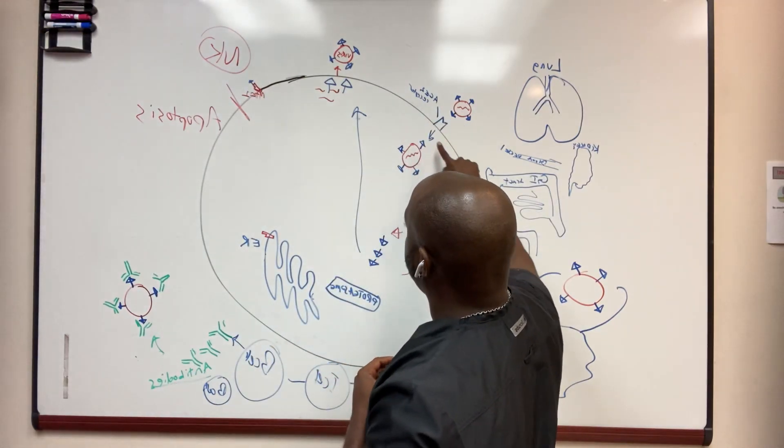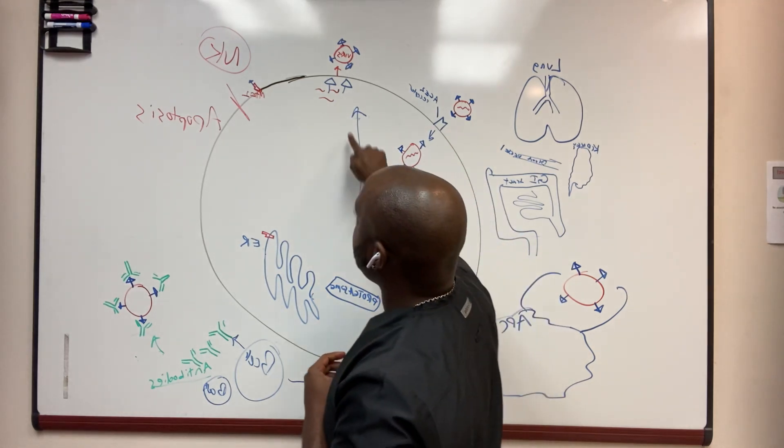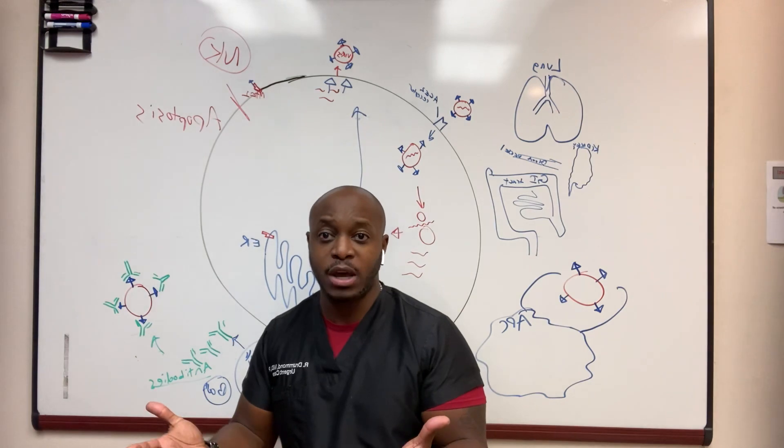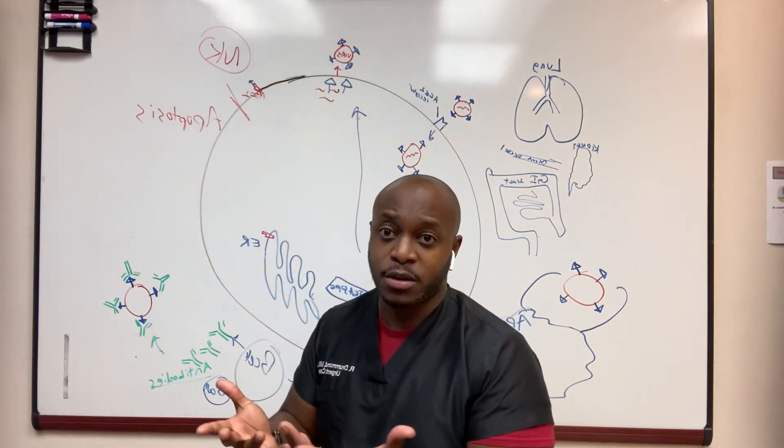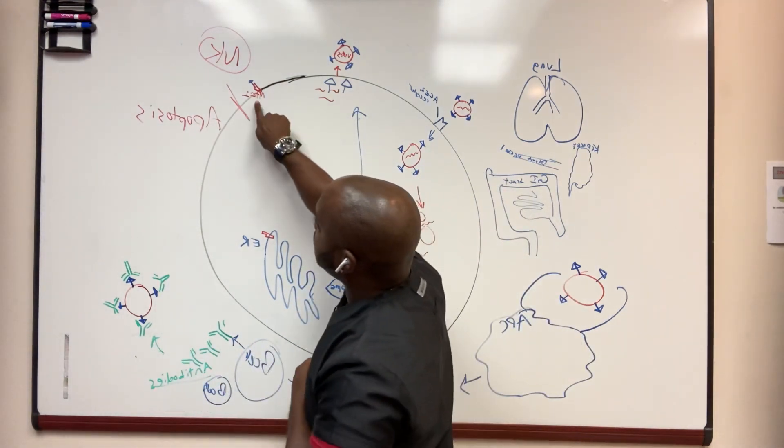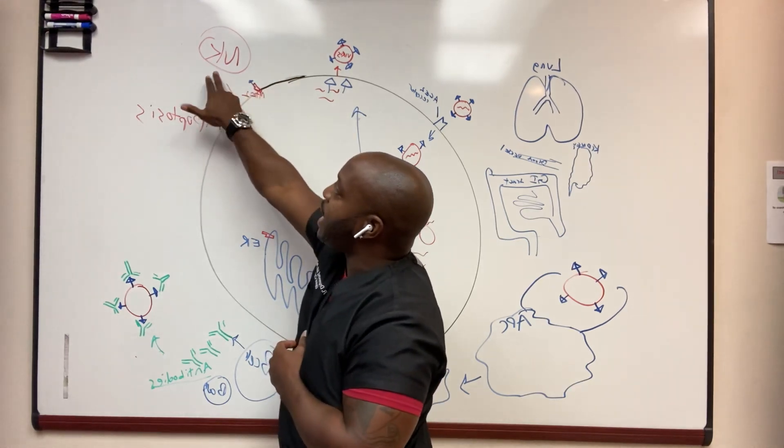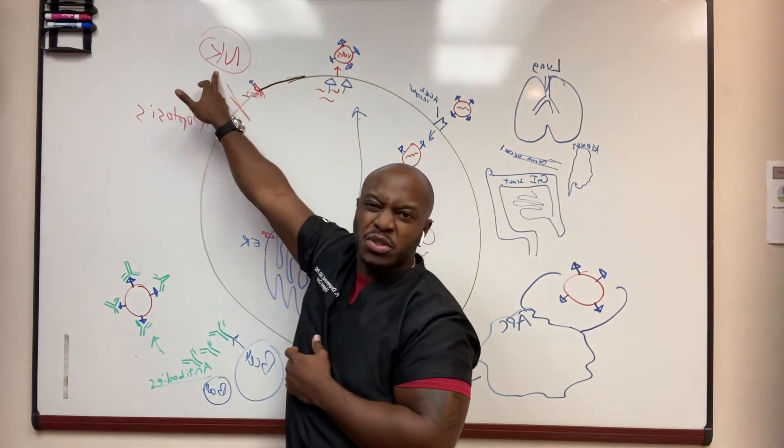So we still got this process where the virus is replicating, making more virus, budding off, taking over the machinery of the cell. So the cell is getting tired. So now you've got this MHC1 presenting the cell and you've got some cells on the outside that see it. This is one of our immune system cells,